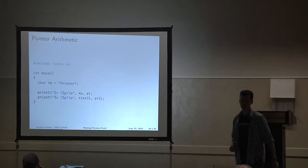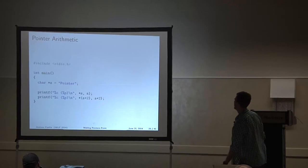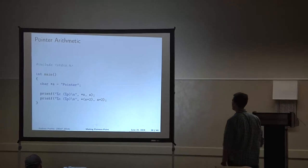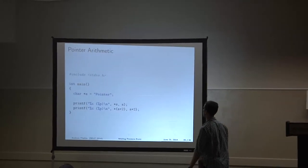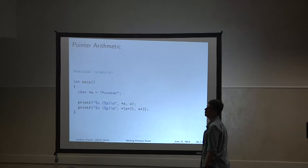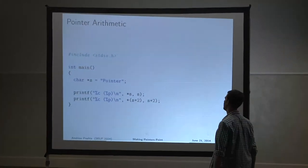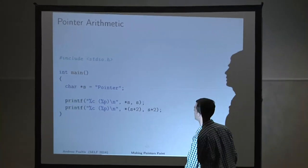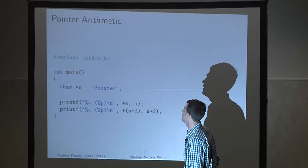Yet another thing you can do with pointers is add to them — do arithmetic with them. You can add and subtract. You can't multiply; it doesn't make any sense, and I'll tell you why.